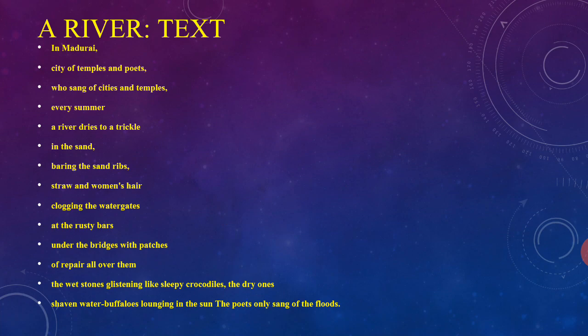A.K. Ramanujan remembers the city of Madurai and he sees the river Vaikai which flows through the city. He says the river has water enough to be poetic only once a year, and then carries away in the first half hour three village houses. He gives a realistic detail of the havoc caused by the river Vaikai.